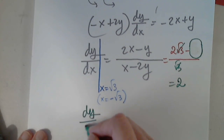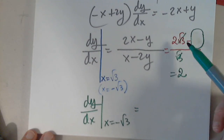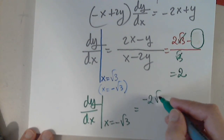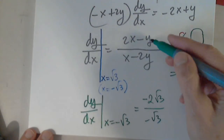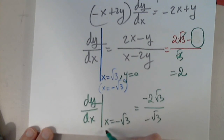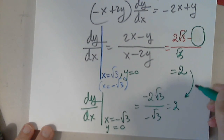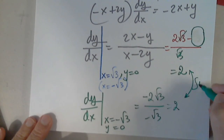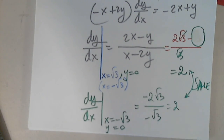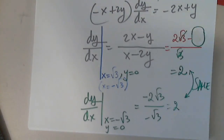I repeat for dy/dx when x equals negative the square root of 3. I get 2 times negative the square root of 3, which is negative 2 root 3. The denominator is negative the square root of 3, since the y terms are 0. The negatives cancel and I again get 2. Since they are the same, the tangent lines are parallel — I don't have to determine the tangent lines separately.